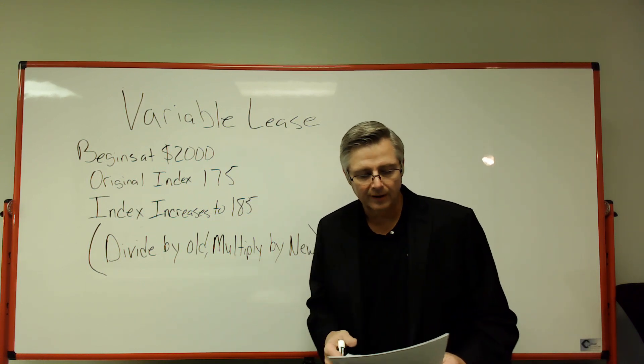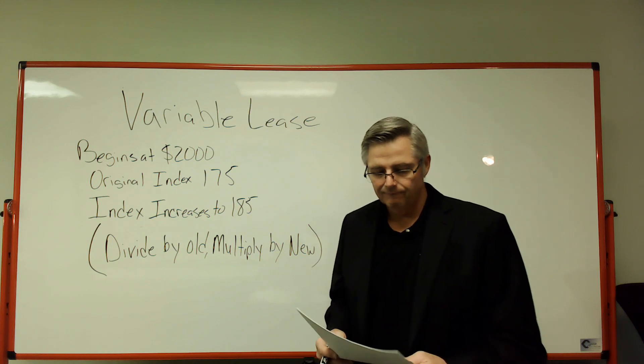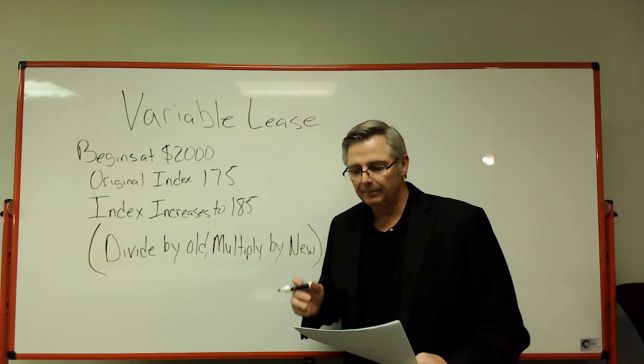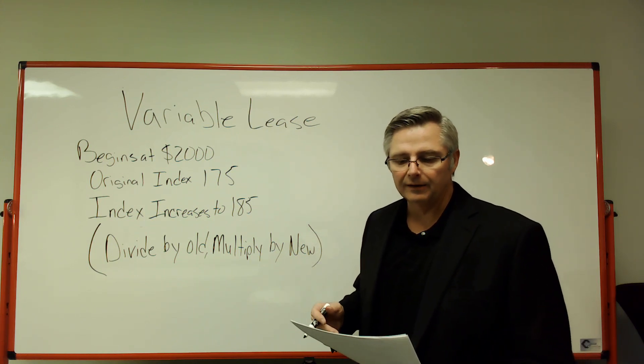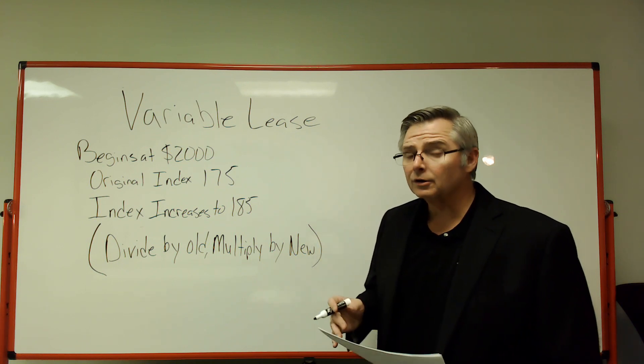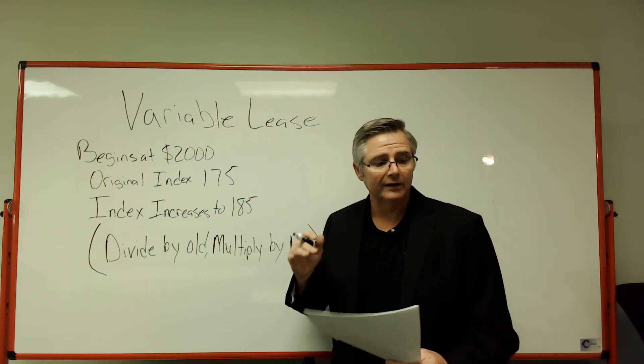It says a business owner negotiates a variable lease for his business. He begins his lease at $2,000 per month and the index is 175. One year later, the index increases to 185. Now, what is the new monthly rent?